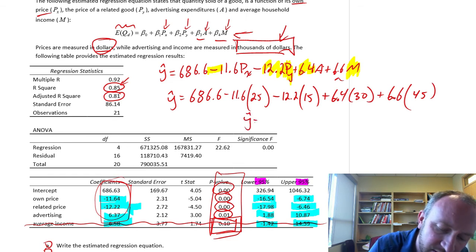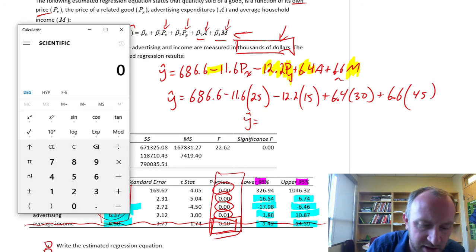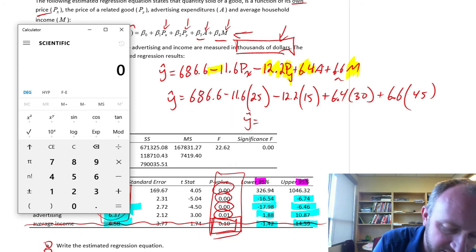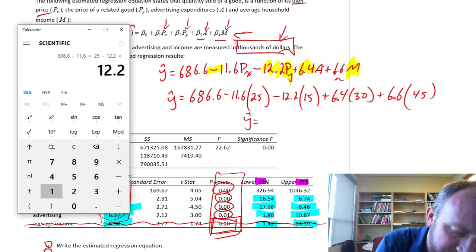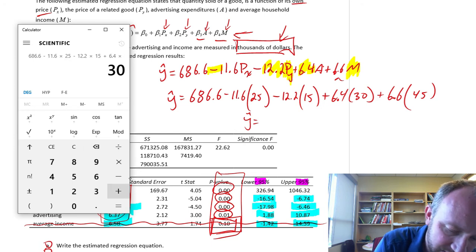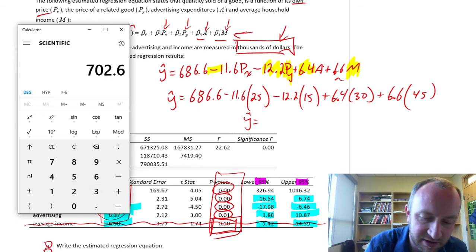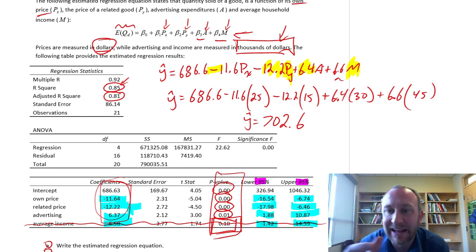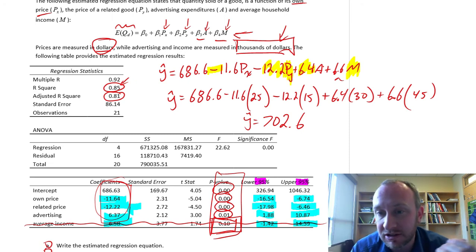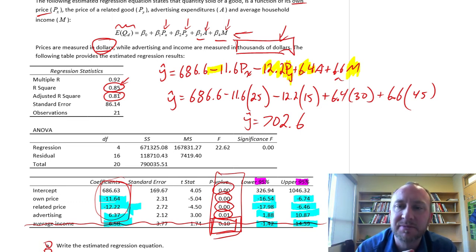Using the calculator: 686.6 minus 11.6 times 25, minus 12.2 times 15, plus 6.4 times 30, plus 6.6 times 45 gives us an estimate of 702.6. This is our estimate of average quantity demanded given those prices, income, and advertising expenditures.